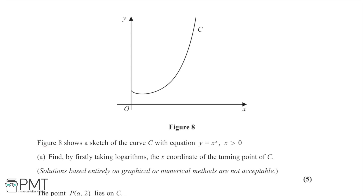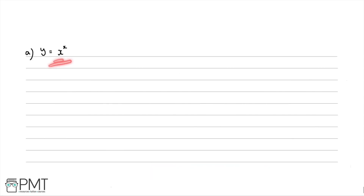In this question we're shown figure 8, a sketch of the curve C with equation y = x to the power of x. In part A, for five marks, we're asked to find the x coordinate of the turning point of C, and we're told to take logarithms. To find a turning point, we find the derivative and set it equal to zero. First, as the question says, we take logarithms of both sides.